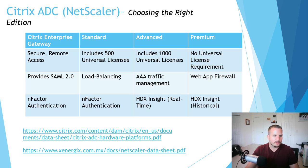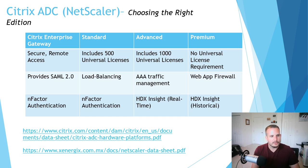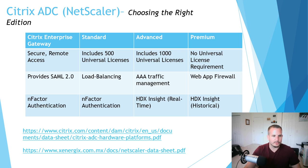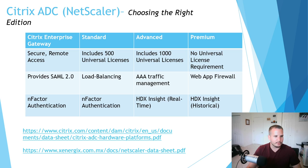Premium has no universal license requirement — it comes with unlimited. With Premium, you also get Web App Firewall, giving you a firewall for your web applications. You also get HDX Insight historical data — the ability to go back and see what's happening in the environment, whereas with Advanced it's only real-time data. Definitely take a look at the feature matrix for the full list of features.